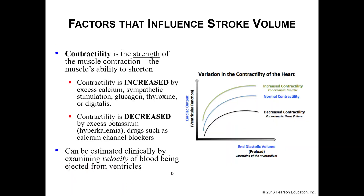Next we have contractility of the heart itself — the strength of the muscle contraction. We can increase contractility by providing extra calcium, which increases the plateau phase and gives the heart more time to build up pressure to contract more forcefully. Sympathetic stimulation — your fight-or-flight response — also increases contractility, as do glucagon, thyroxine, and digitalis.